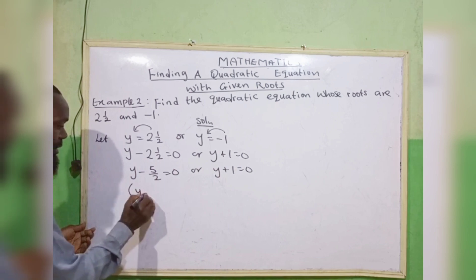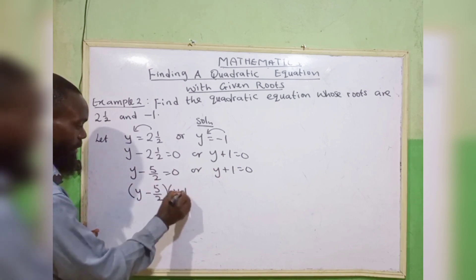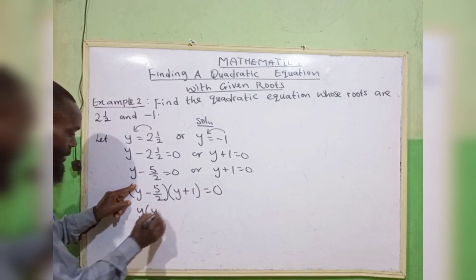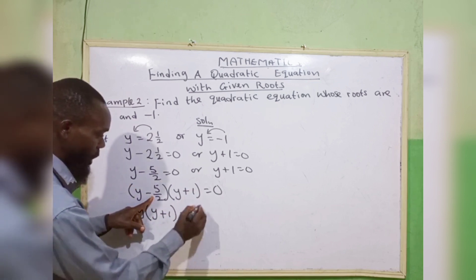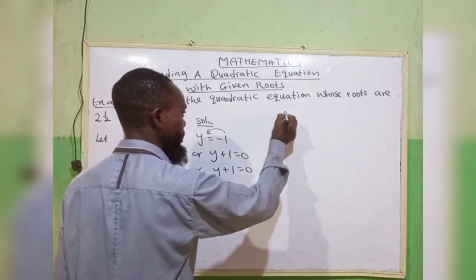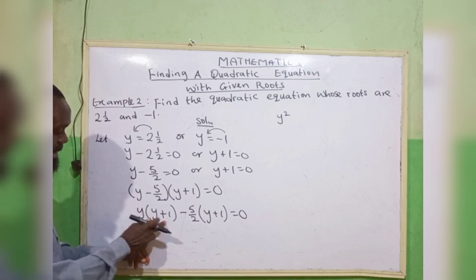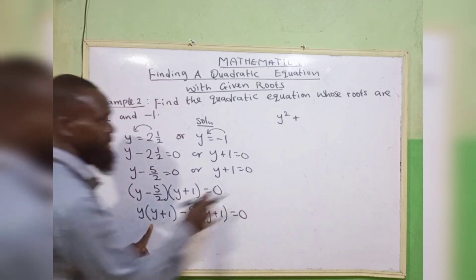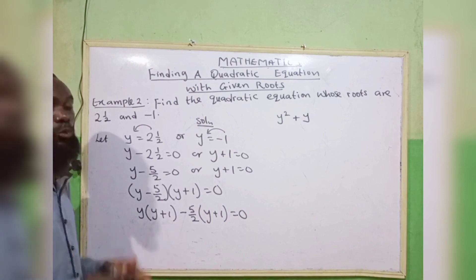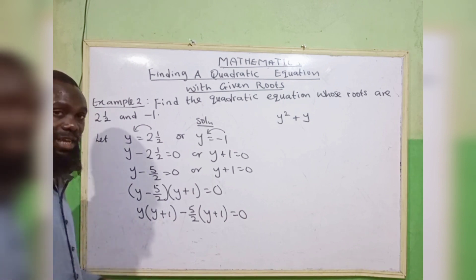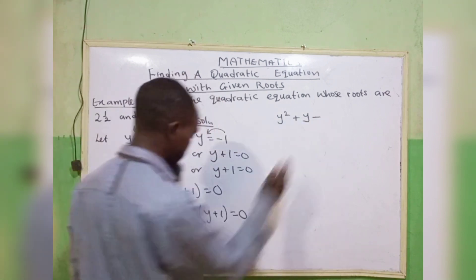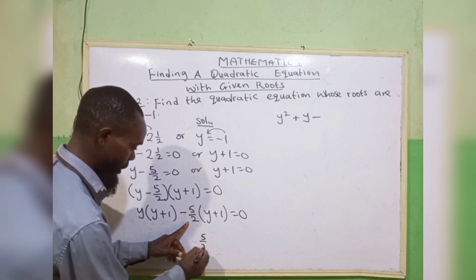Taking them together: (y − 5/2)(y + 1) equals 0. Expanding: y times y gives y squared. Plus times plus gives plus y. Then minus 5/2 times y gives minus 5y/2. And minus 5/2 times 1 gives minus 5/2. So we have y squared plus y minus 5y/2 minus 5/2 equals 0.